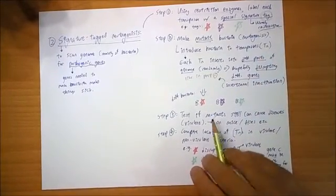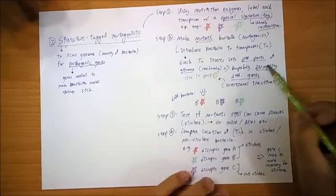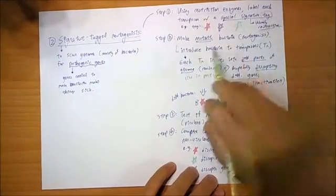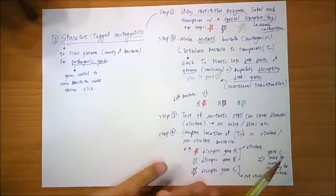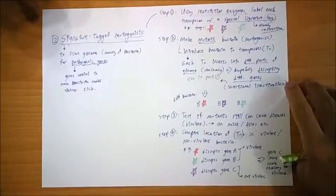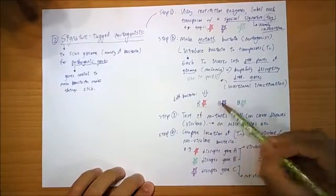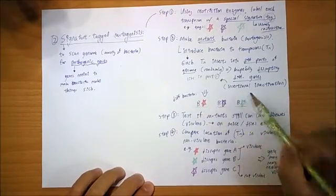It'll be random, and hopefully, it will disrupt different genes. So each of these will hopefully disrupt a separate gene so that you can see a variety of effects. Let's say you have three bacterias now.